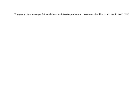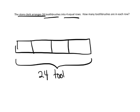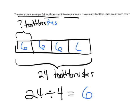In this problem, a store clerk is arranging 24 toothbrushes into four equal rows — how many toothbrushes are in each row? For my tape diagram, I know there are four equal rows, so I'll draw four equal rows and label the total as 24 toothbrushes. We don't know how many are in each one, so I'll put a question mark for each row. Written as a division problem, this is 24 divided by 4, and as we solve it we'll discover we need 6 in each row.